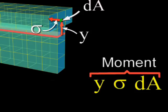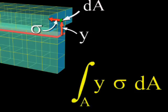We add up all such contributions by integrating over the cross sectional area to produce the total moment M acting on this section. A minus sign is added so that a sagging moment can be considered positive.